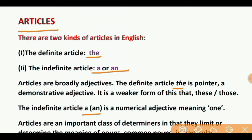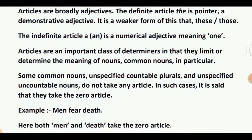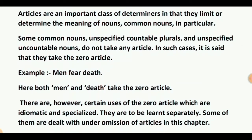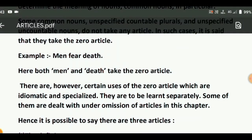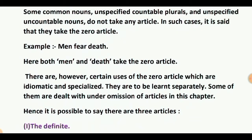Articles are an important class of determiners in that they limit or determine the meaning of nouns, common nouns in particular. Some common nouns — unspecified countable nouns and unspecified uncountable nouns — do not take any article. In such cases, it is said that they take the zero article. Example: 'Men fear death.' Here, both 'men' and 'death' take the zero article. There are, however, certain uses of zero article which are idiomatic and specialized. They are to be learned separately. Some of them are dealt with under omission of articles in this chapter.